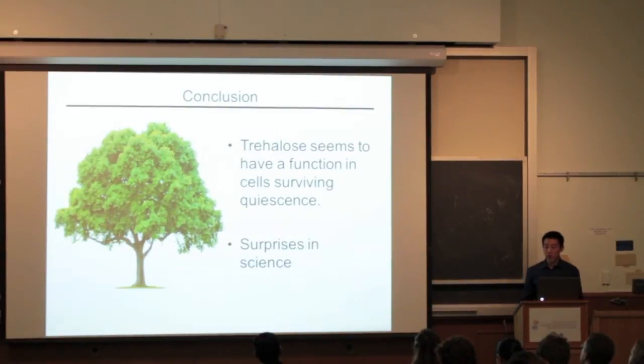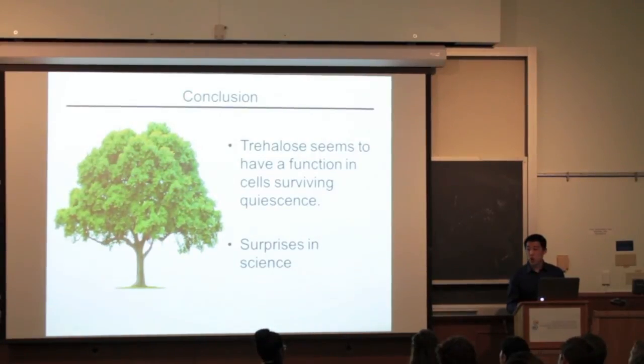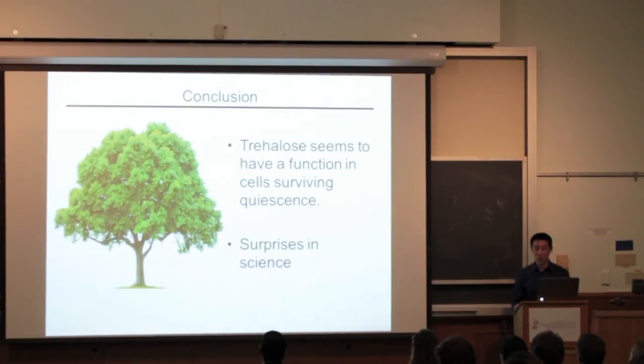In conclusion, we found that trehalose seems to have a function in cells surviving quiescence. It possibly explains why trehalose accumulates only in stationary phase when these cells are in quiescence.